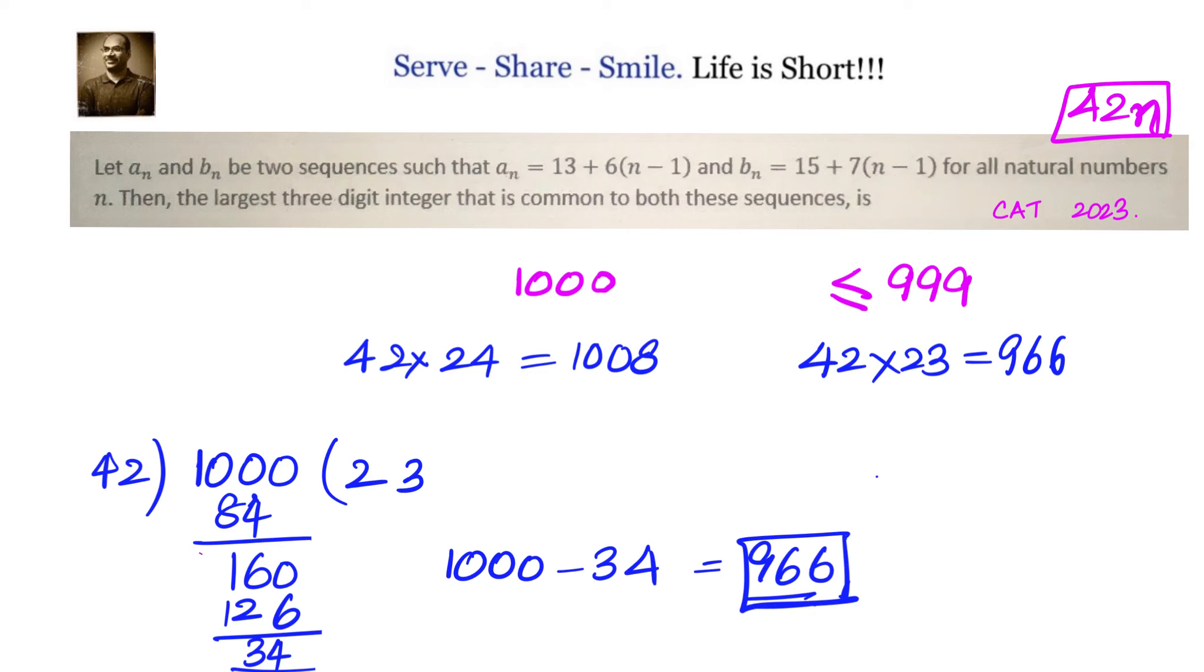But what we have now, this is x minus 1. So x minus 1 is 966, which means x will be 967. So the largest 3-digit integer that is common to both sequences is 967.